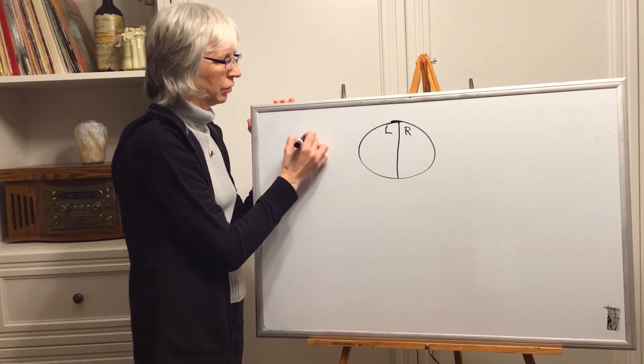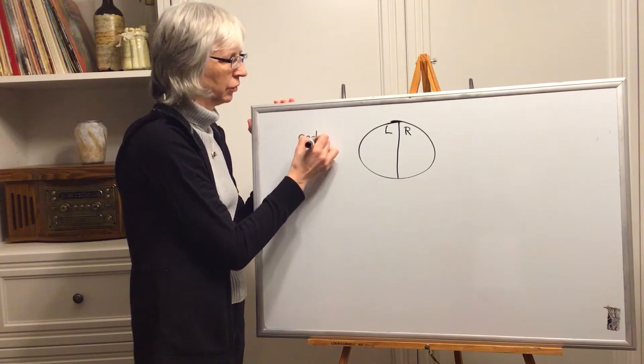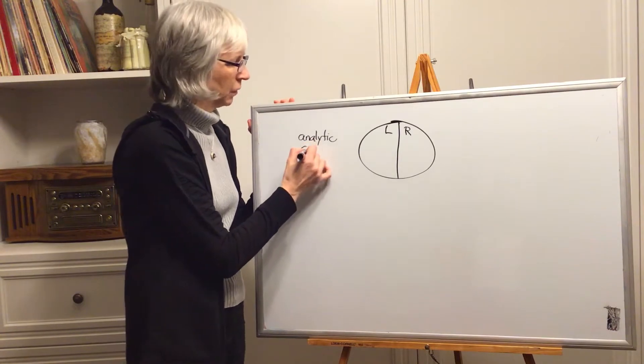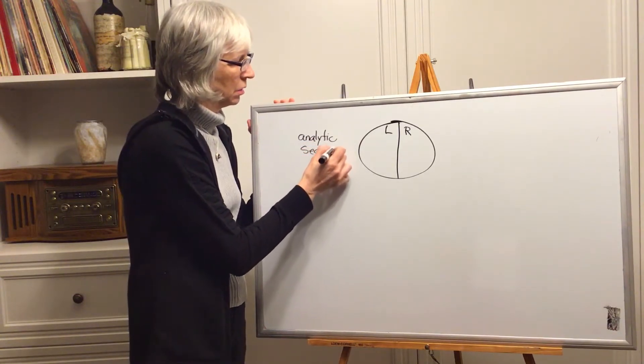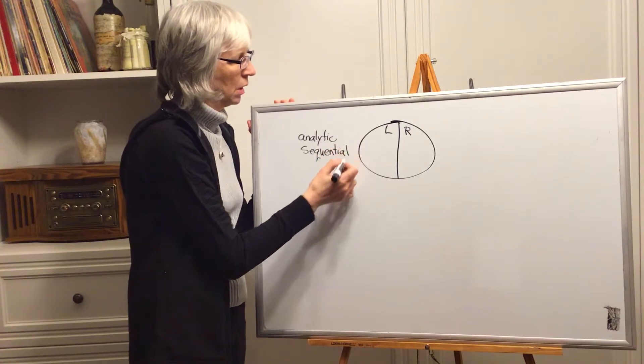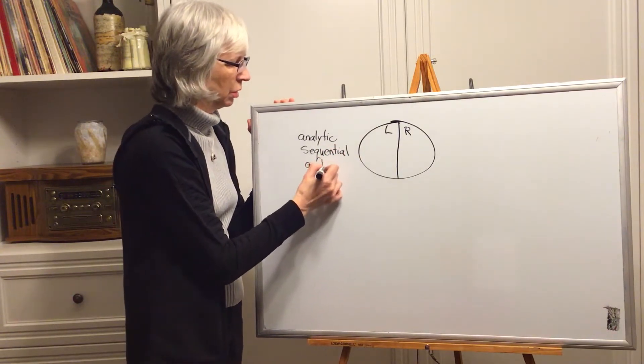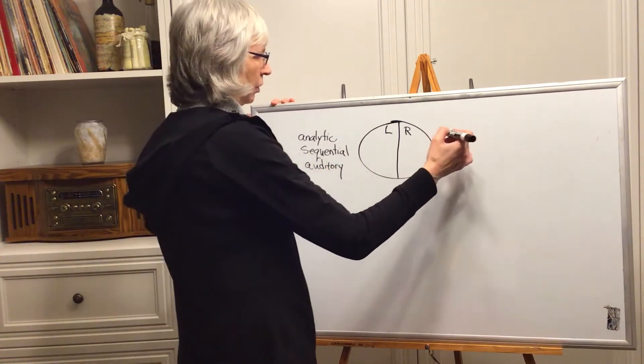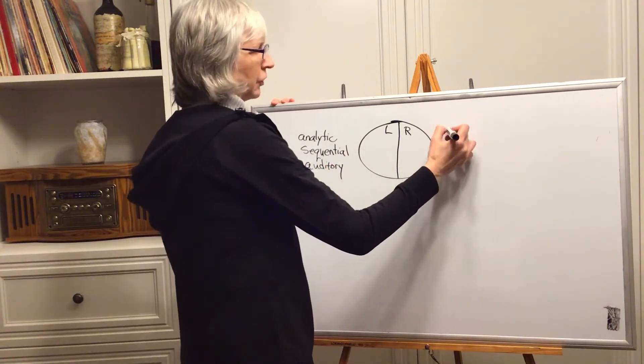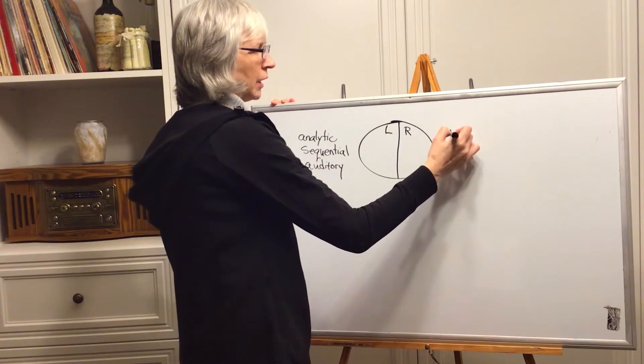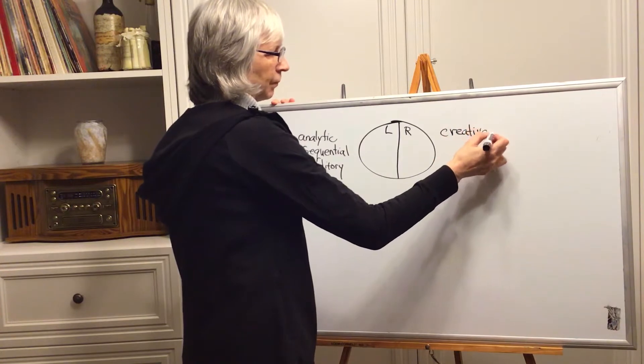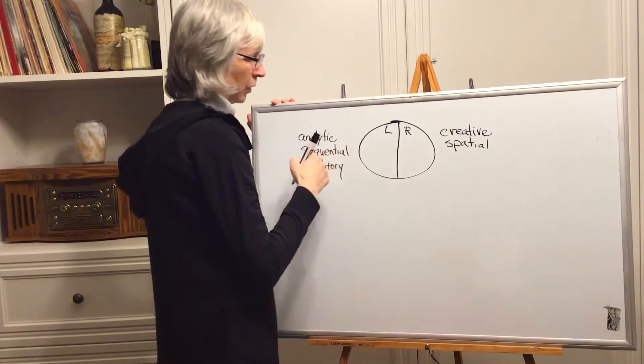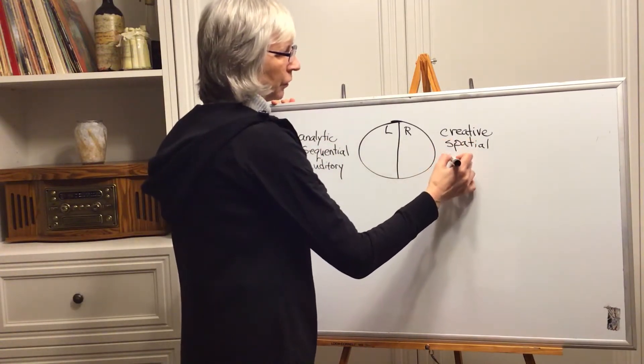The left hemisphere is what we consider controls the analytical thinking, the sequential, and the auditory learning. The right hemisphere of the cerebrum is considered more the creative side, the spatial versus sequential, and the visual side of the brain.